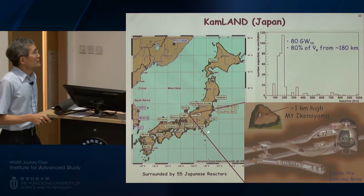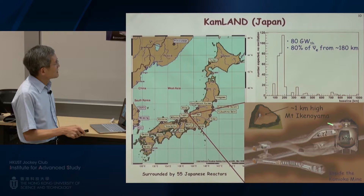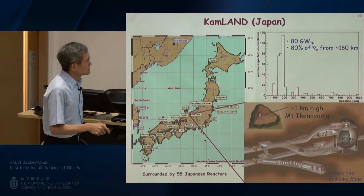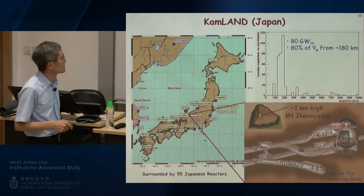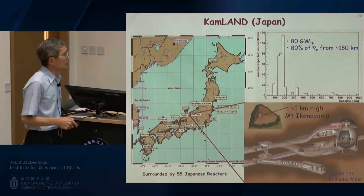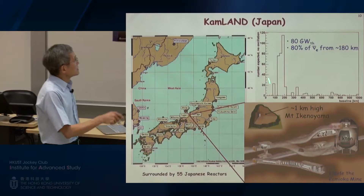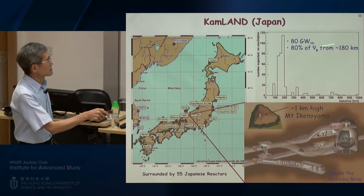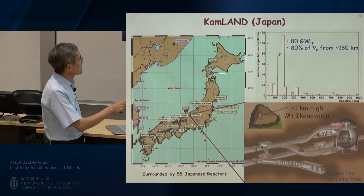One of the key experiments was KamLAND in Japan. This is a one-kiloton liquid scintillator detector in a deep underground experimental hall in the Japanese Alps. The nice thing about this experiment is that the detector is surrounded by 55 Japanese nuclear reactors, and at that time all of them were running. Because of the abundance of nuclear reactors, we could essentially detect the number of antineutrinos coming from all the reactors at a distance equivalent to about 180 kilometers. So the question we wanted to answer was: if we know the number of reactor neutrinos coming from all the reactors, how many would we see at KamLAND?